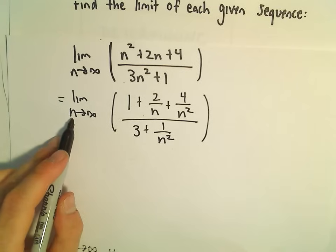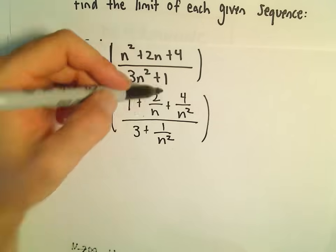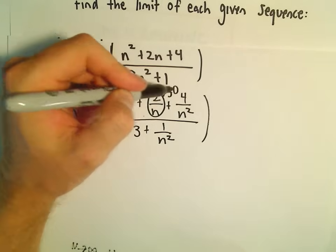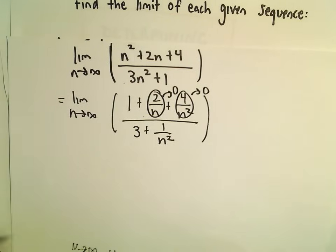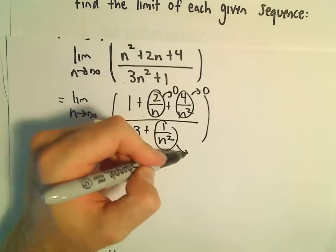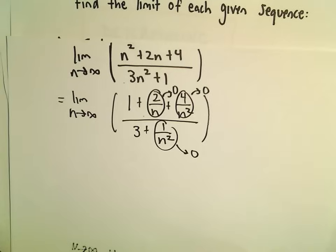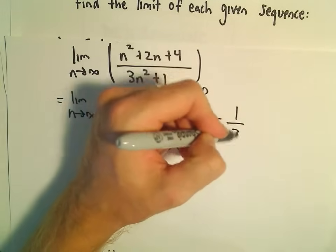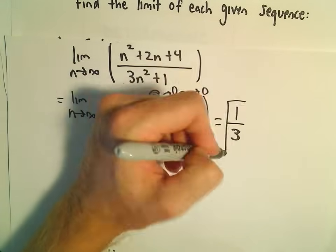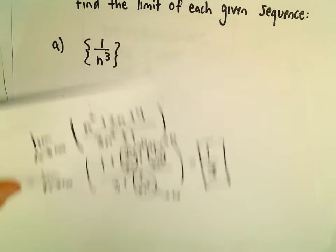And the idea is now it's more clear because as n goes to infinity, this term will go to 0. The 4 over n squared will go to 0. The 1 over n squared will get arbitrarily close to 0. So we're just left with 1 third as the limit for the second sequence.